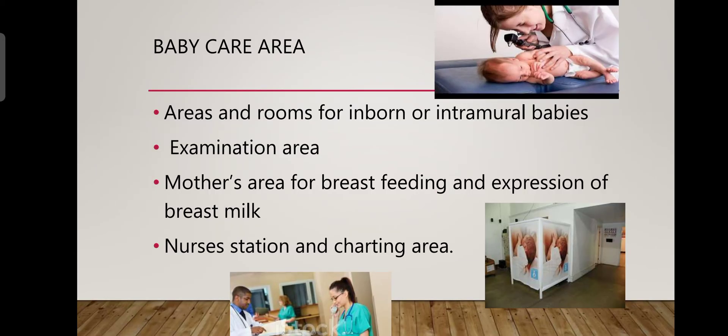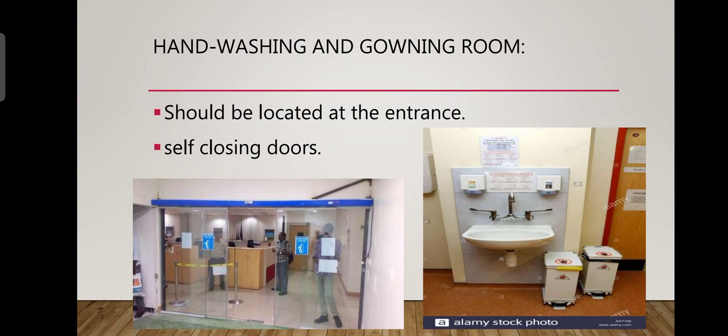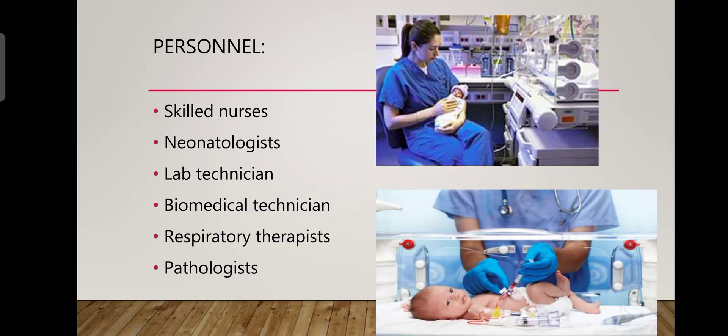The baby care area includes a room for inborn or intramural babies, examination area, a mother's area for breastfeeding and expression of breast milk, and a nurse station with charting area. A hand-washing and gowning room should be located at the entrance, with self-closing doors. Key NICU staff include skilled nurses, neonatologists, lab technicians, biomedical technicians, respiratory therapists, and pathologists.